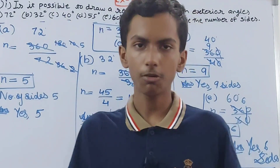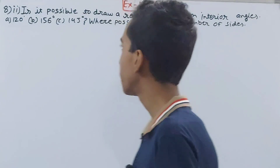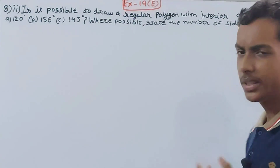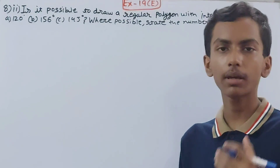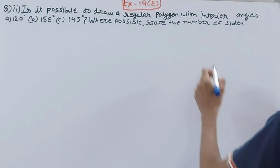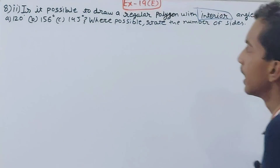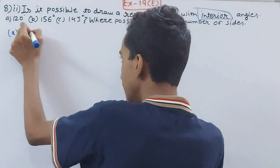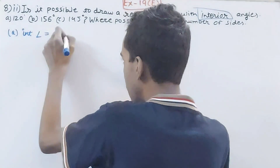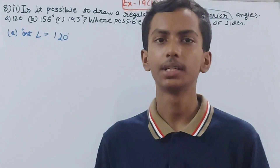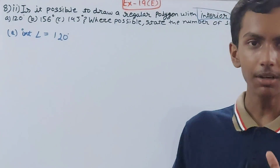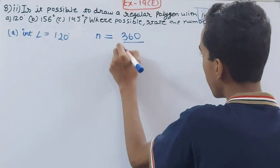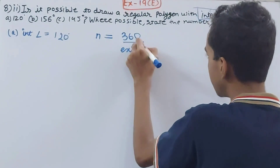Now see the second part — it is the same question, is it possible to draw a regular polygon, but instead of exterior angles they have given us interior angles. The formula for number of sides remains n equals 360 divided by the exterior angle, but we need to first find the exterior angle from the given interior angle.